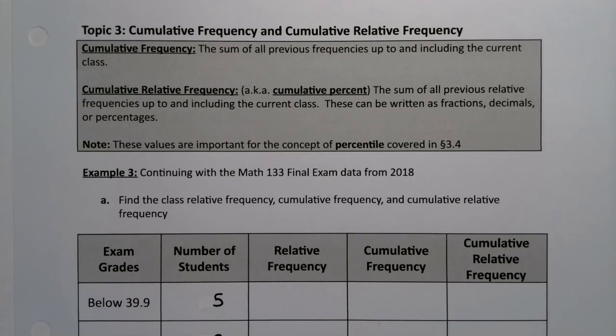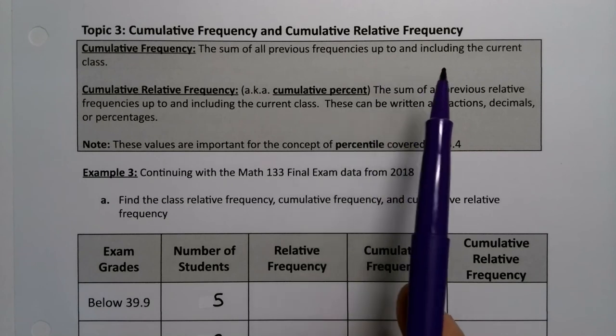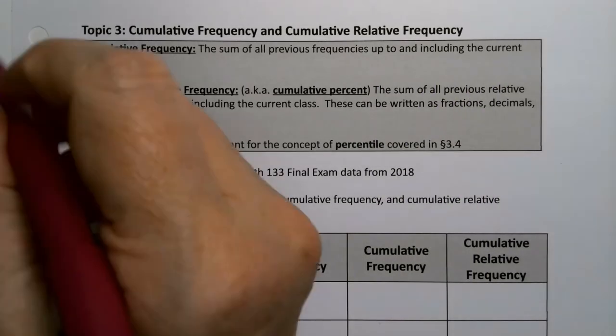In this topic, we want to learn about cumulative frequency and cumulative relative frequency. Now, cumulative frequency is the sum of all previous frequencies up to and including the current class. And remember, class is the same thing as bin or group.